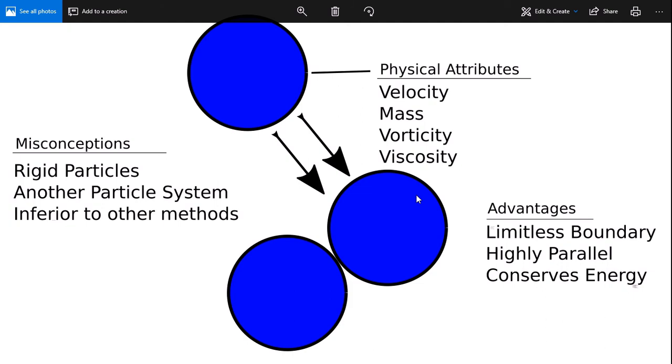So let's get started. SPH models fluids using particles. Now each particle has physical attributes. For example, velocity, mass, vorticity, and viscosity.